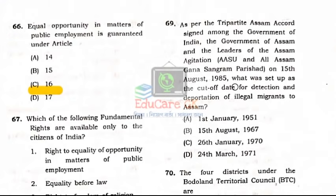Question Number 69: As per the Tripartite Assam Accord signed among the Government of India, the Government of Assam, and the leaders of the Assam agitation — AASU and All Assam Gana Sangram Parishad — on 15 August 1985, what was set as the cut-off date for detection and deportation of illegal migrants to Assam?